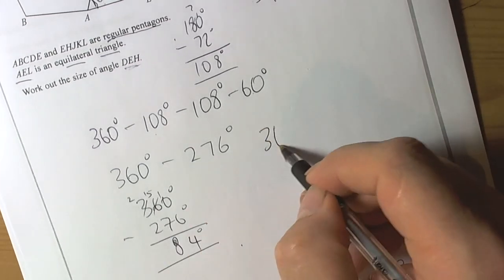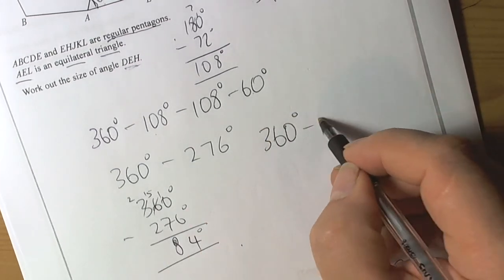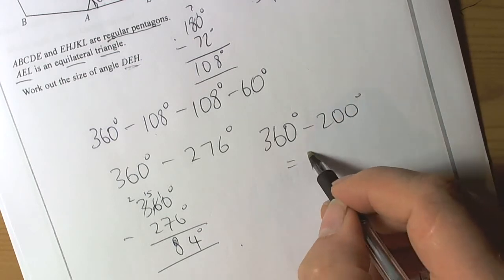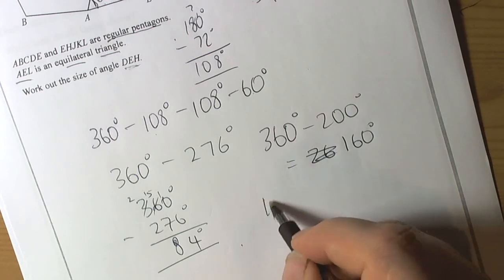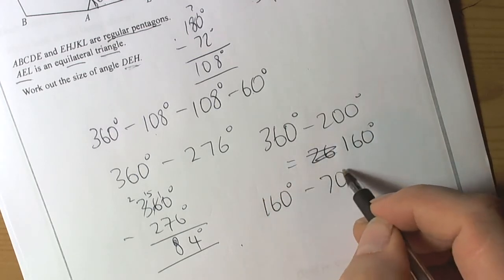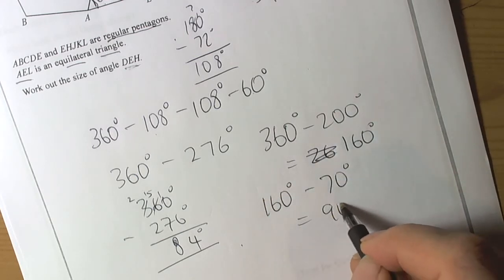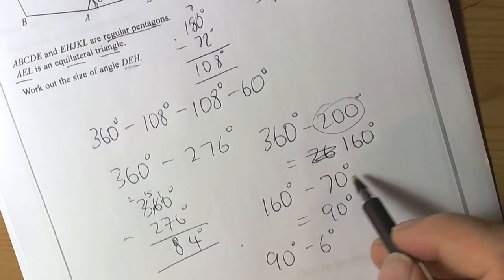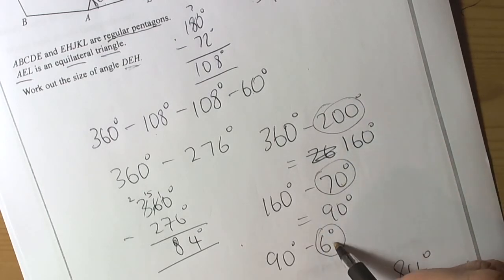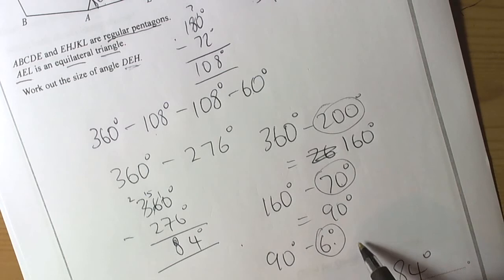If you're not happy with that technique, then you could do 360 take away 200, that's going to be 160 degrees. Then you could do the 160 take away 70, that's going to be 90 degrees. And then you're left with doing 90 degrees take away 6 degrees. The 200, the 70, and the 6 made 276. Take away each part, and then you end up with 84 degrees.